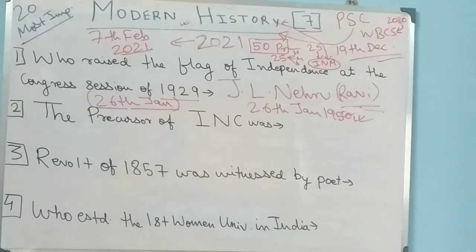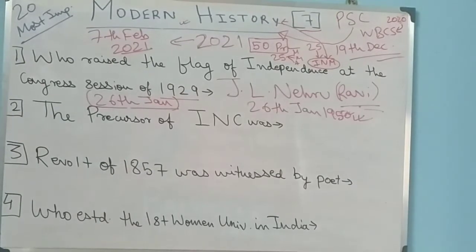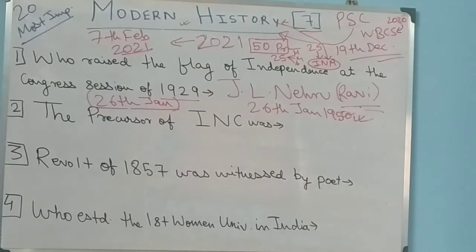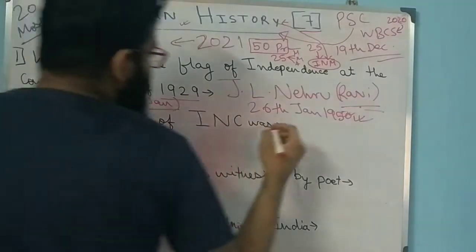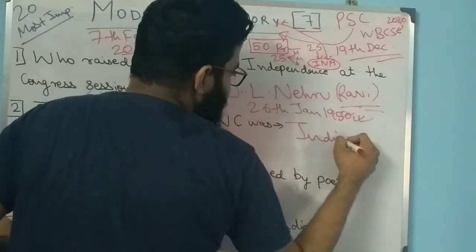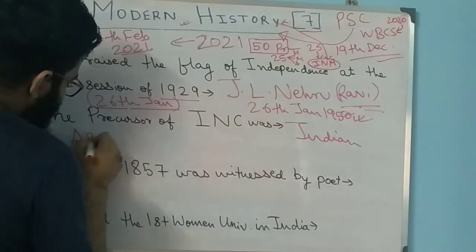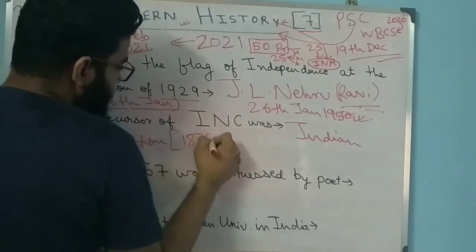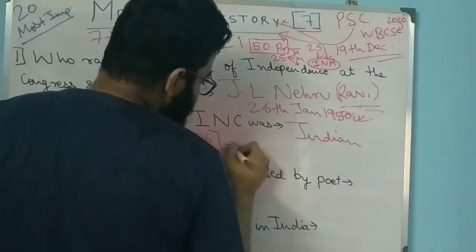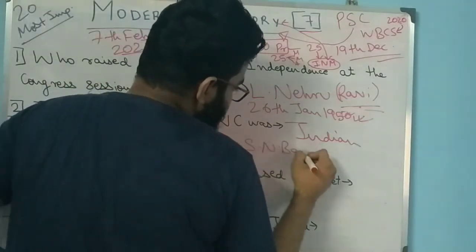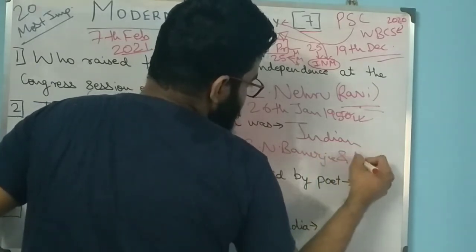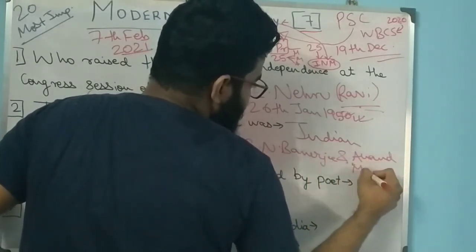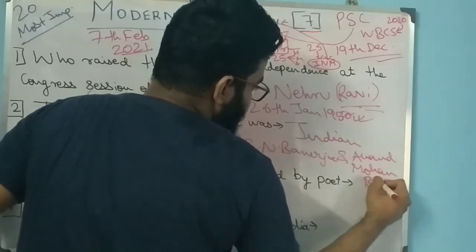Question 2: The precursor of INC - which group or organization existed before INC? The answer is the Indian Association, which was founded by Surendranath Banerjee. Indian Association was founded in 1876. Its founders are Surendranath Banerjee and Ananda Mohan Bose.